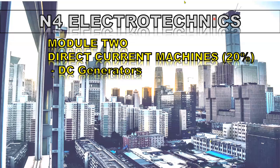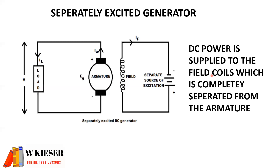Welcome to this video for N4 Electro-Techniques. In this video we'll be looking at DC generators. The first type of generator is the separately excited generator, where the DC supply to the field coils is completely separated from the armature — hence it is known as separately excited.